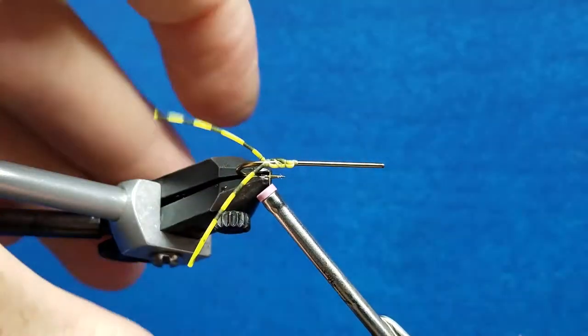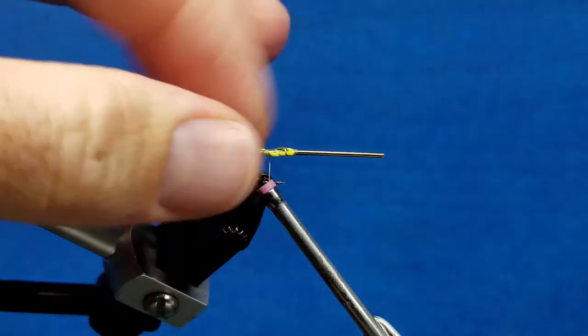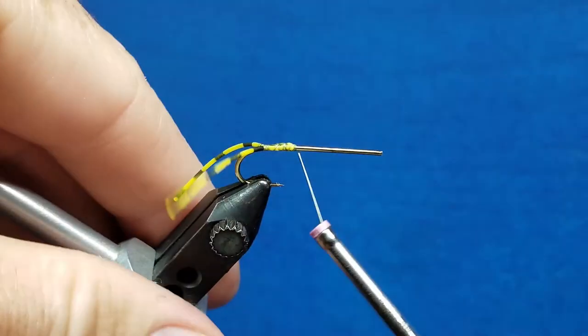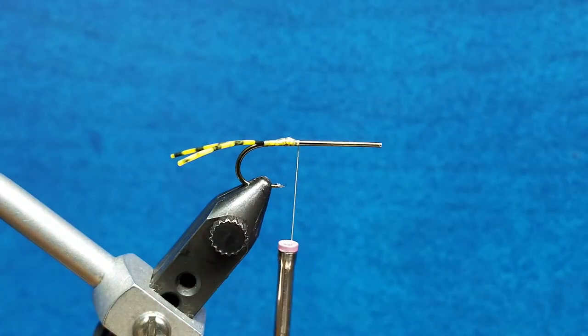So for a Pat's rubber legs, for example, a big stonefly with the rubber tail, that's a great way to tie in the tail. If we come forward on this for that same pattern—I reference it because it's a very common pattern—